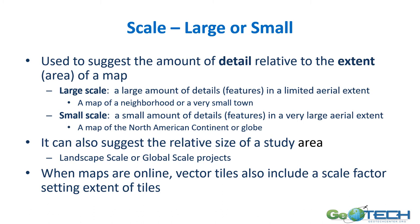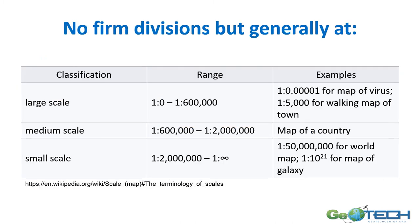When maps are online, vector tiles can also include a scale factor setting the extent of those tiles. There is really no firm division between large, medium, and small scale. Looking at large scales, they range from one to zero up to one to six hundred thousand. A walking map of a town would be about one to five thousand, a medium scale map of a country falls in the middle, and small scale runs from one to two million to infinity — covering global or even galaxy scale maps.